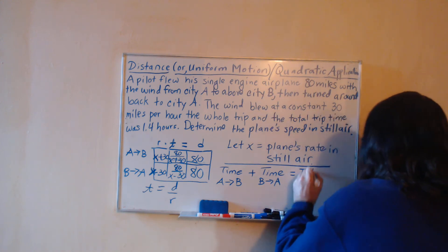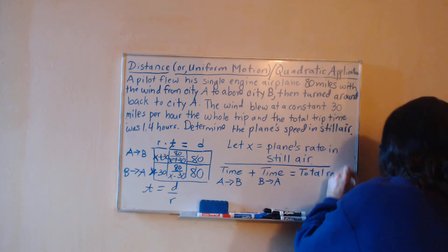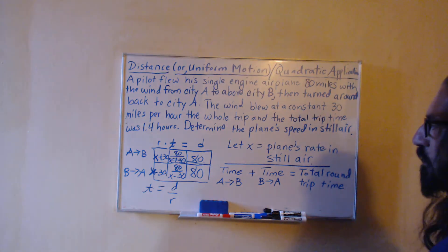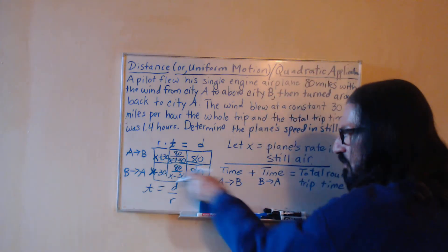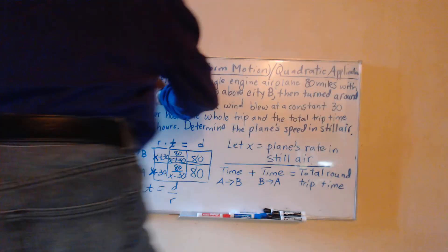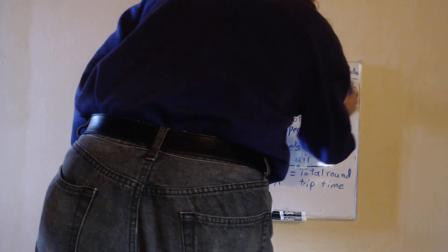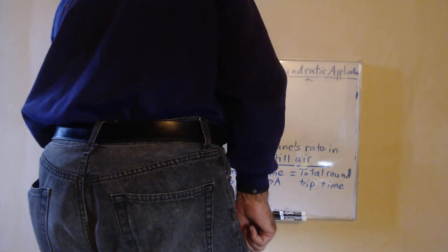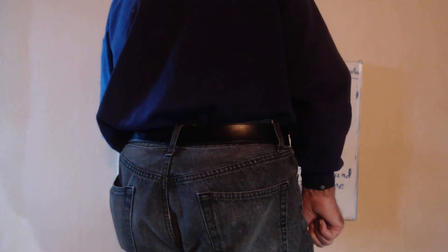How's that going to help us? We still haven't used the 1.4 hours but that's a total of the times. So there's the time from A to B plus the time from B back to A equaling the total trip time, it's a round trip. That's where the 1.4 hours is going to go and we'll be filling in on this side the expressions we just worked out using the table.